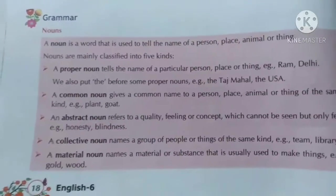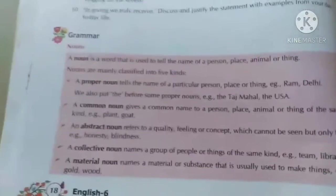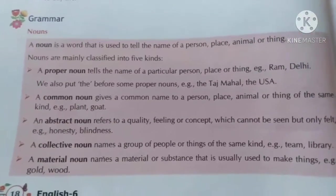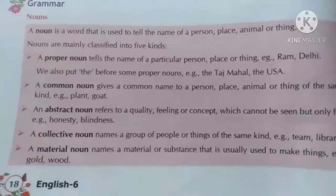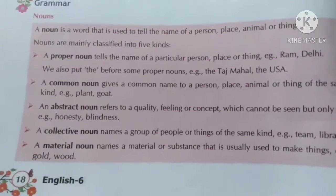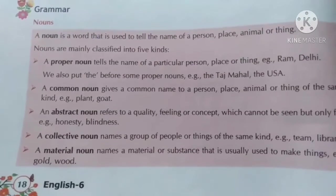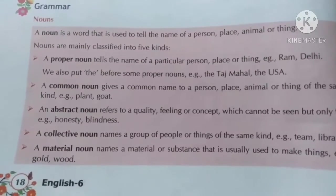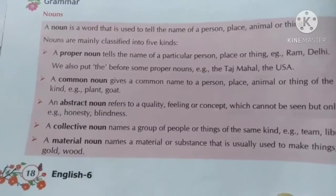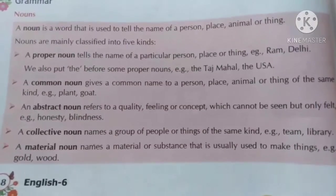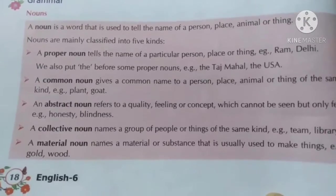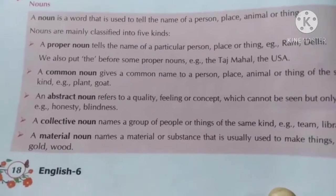Proper noun tells the name of a particular person, place, or thing. Jo hum log ko naam batata hai kisi ka bhi. Common noun — jo common ho — person, place, animal or thing ke liye. Abstract noun refers to the quality — matlab quality of the person, thing, or place. Kisi ke bhi quality ho, usko abstract noun bola jata hai.